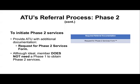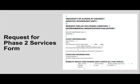To initiate phase two services, you need to provide additional documentation called the request for phase two services form. Although ideal, the class member does not need to have had a phase one in order to obtain phase two services. This form requires information such as the apartment address, client name, housing locator information, care coordinator's information, and the landlord's contact information.